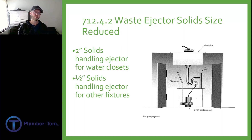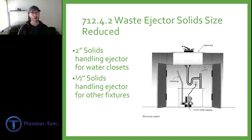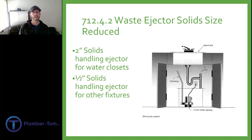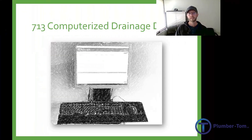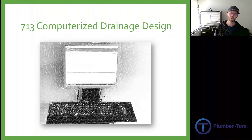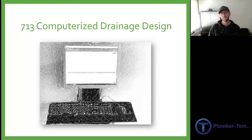712.4.2 talks about waste ejector solids size, stating that anything receiving waste from a toilet must be able to handle up to two-inch solids. If it's not a toilet — like a sink — the requirement is half-inch solids. Section 713 covers computerized drainage design and basically states that any sizing done by computers would have to be approved.